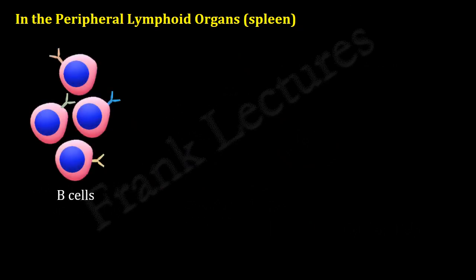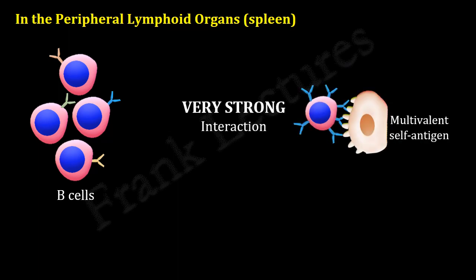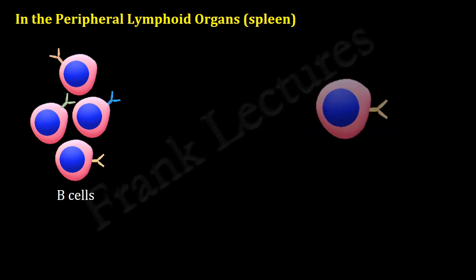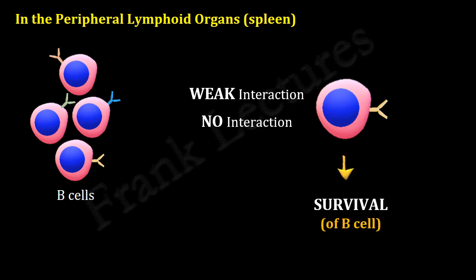Now suppose these are the B cells that migrated to the periphery from the bone marrow. If B cells bind very strongly to a multivalent self-antigen, the cell receives a signal to undergo apoptosis. And if there is a weak interaction or no interaction, such B cells mature further in the peripheral lymphoid organs.